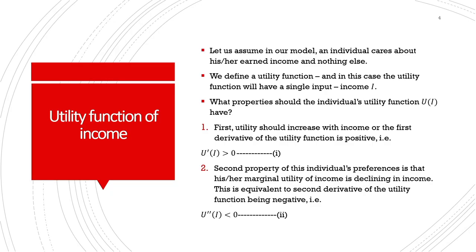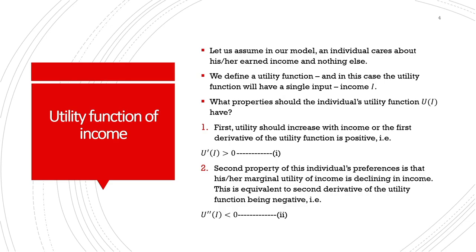Let us understand the utility function of income. In earlier classes we were introduced to a health utility function; in this lesson we get introduced to the basic idea of a utility function of income. In our model, an individual cares only about earned income. We define a utility function U(I) with a single input — income. This is guided by the universal rule of declining marginal utility of income: utility increases with income (first derivative positive), and marginal utility of income is declining (second derivative negative).